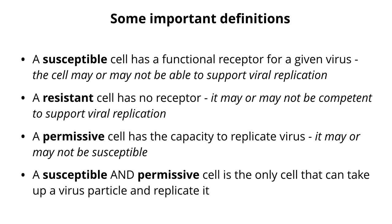A susceptible cell has a very specific definition in virology: it is a cell that has a receptor for the virus. That's all that means — it has no other implications for the rest of the infectious cycle. So if you hear someone say you're susceptible to a virus, technically that's not correct because all susceptibility means is having a receptor. It has nothing to do with the rest of the replicative cycle.